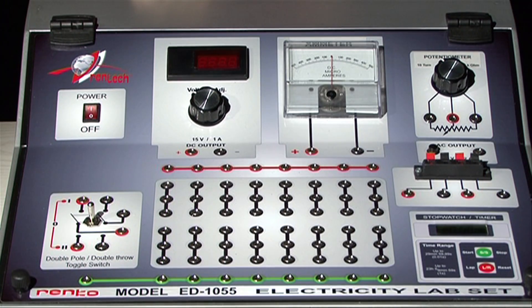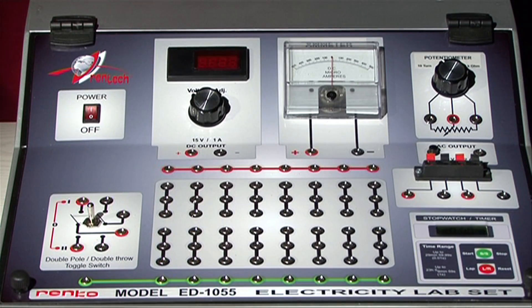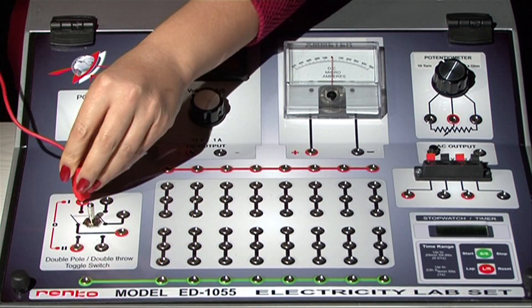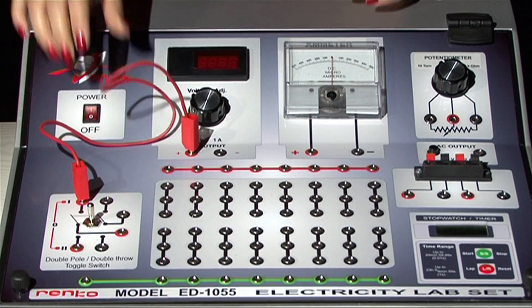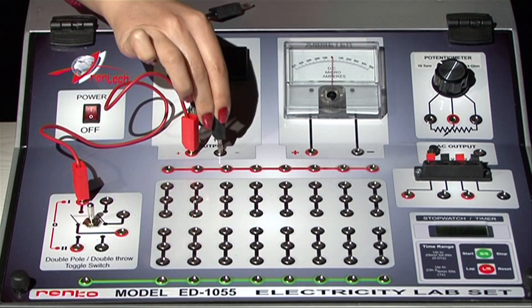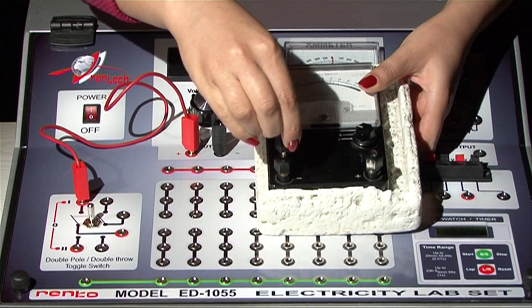A chronometer will be used for following the time dependence of the current. Now construct an RC circuit. Let position 1 of the switch turn on the charging circuit. Use a galvanometer to measure the current. Connect the galvanometer to the circuit.